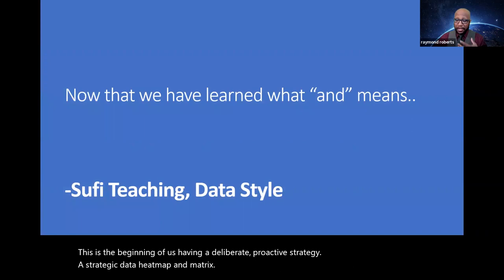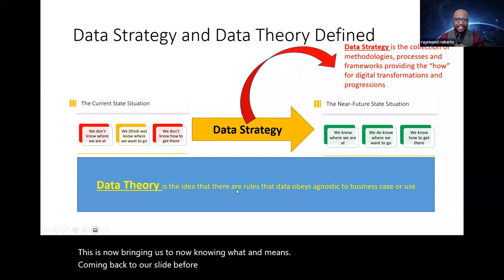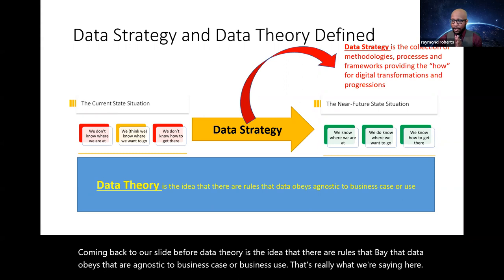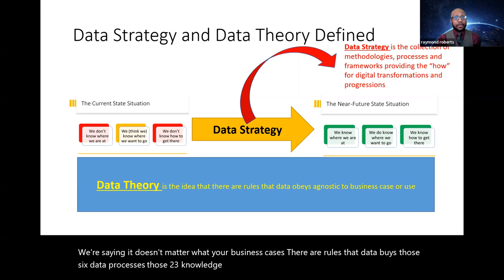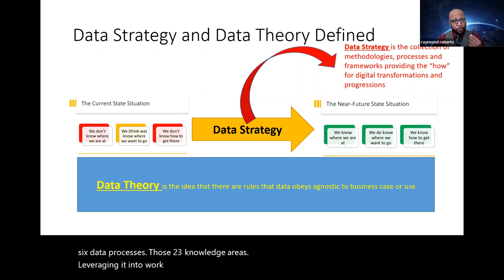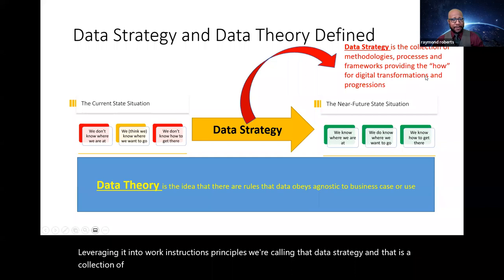This is the beginning of us having a deliberate, proactive strategy. A strategic data heat map and matrix. This is now bringing us to now knowing what 'and' means. Coming back to our slide before, data theory is the idea that there are rules that data obeys that are agnostic to business case or business use. That's really what we're saying here. We're saying it doesn't matter what your business case is. There are rules that data obeys. Those six data processes, those 23 knowledge areas. Leveraging it into work instructions, principles. We're calling that data strategy. And that is a collection of these methodologies and processes and frameworks that provide the how. How do we get from our current state to our near state situation?